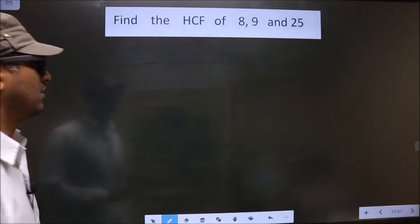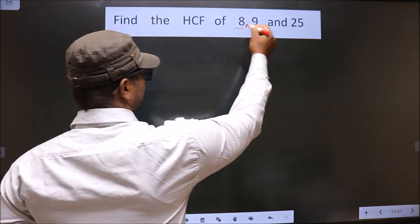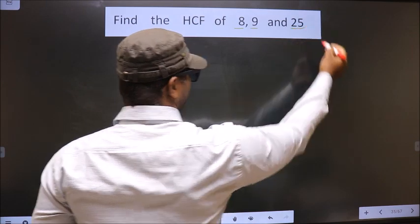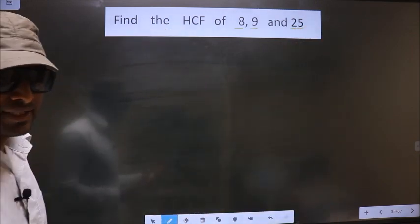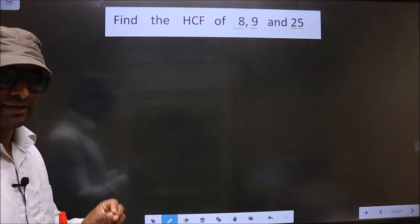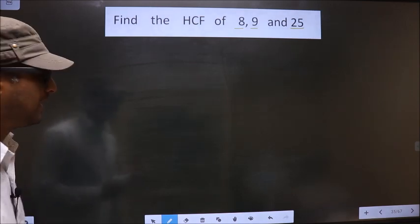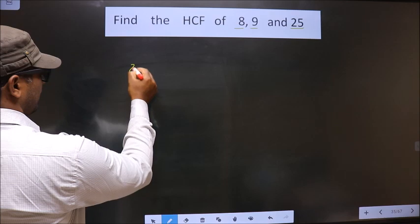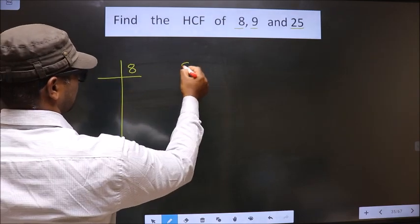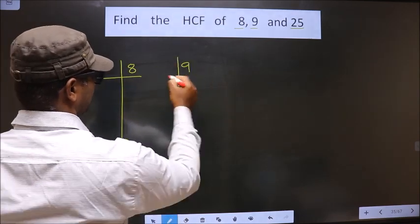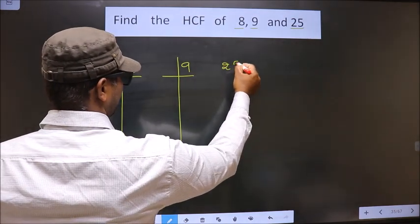Find the HCF of 8, 9, and 25. To find the HCF, first we should do prime factorization of each number separately. That is 8, 9, and 25.